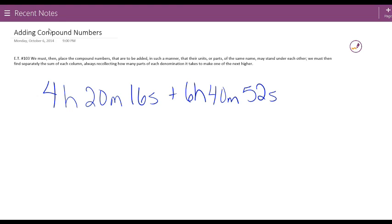Here again, the most common application that we would see in modern-day American society—because England does still use the pound system predominantly—but here for us the most common application would be telling time. If we have to measure lengths of time, so I have 4 hours 20 minutes and 16 seconds plus 6 hours 40 minutes and 52 seconds, we have our compound numbers that are being added.